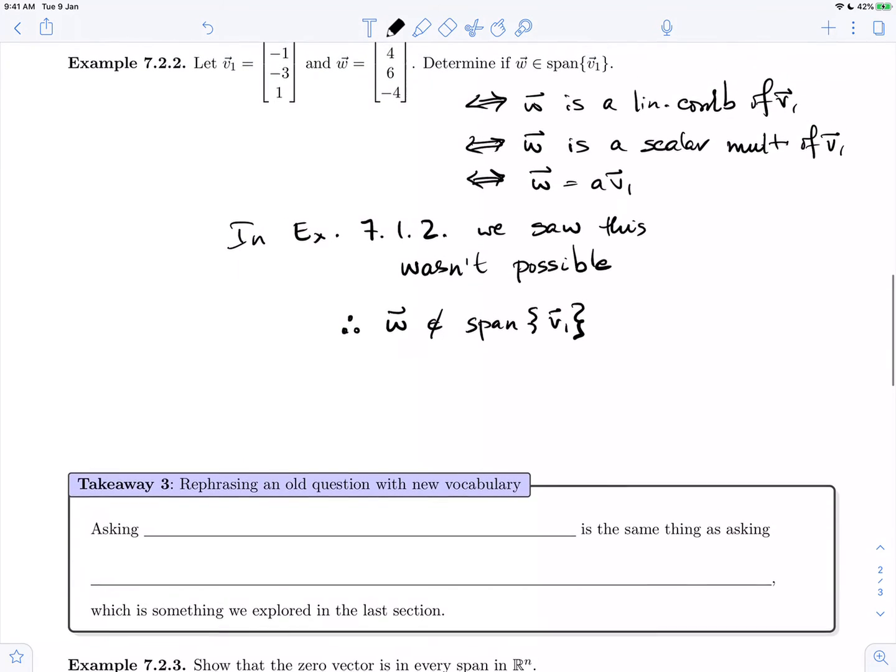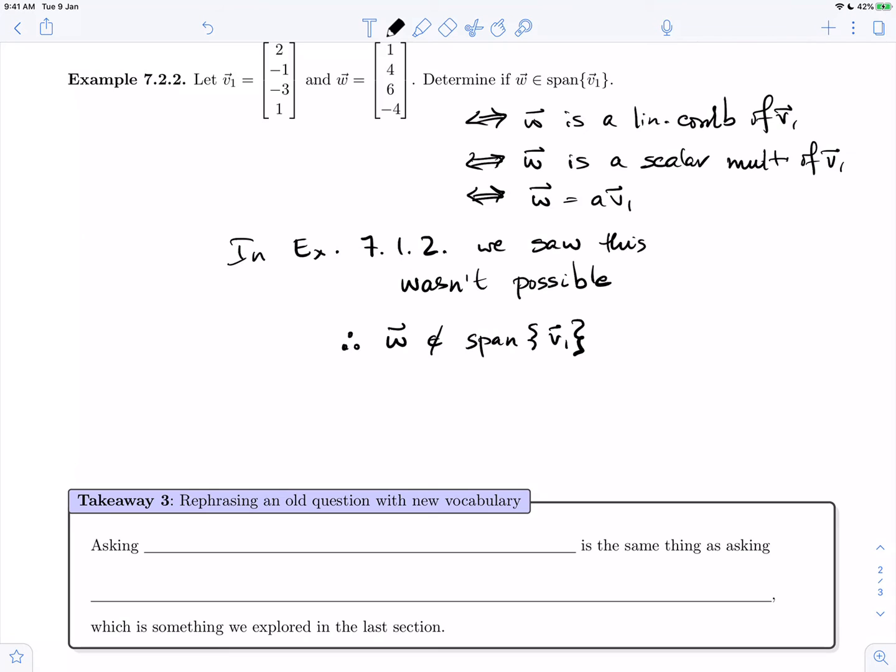So all of this really feels like nothing new. It is just a rephrasing so far. We'll see why we bother with this rephrasing. But this is takeaway three: asking 'Is w in the span of vectors v1, v2, up to vk?' is exactly the same thing as asking 'Can w be expressed as a linear combination of these vectors?', which is something that we've explored.